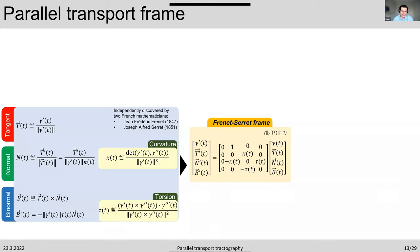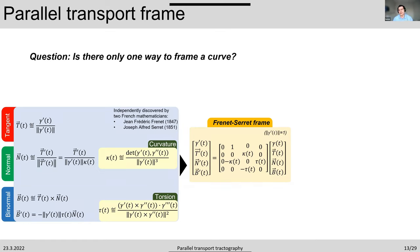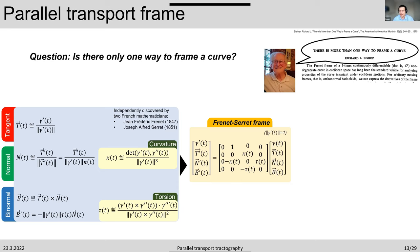The next question was: is there only one way to frame a curve? To our help, Richard Bishop's 1975 paper, titled 'There Is More Than One Way to Frame a Curve,' provided the answer. Professor Bishop started with the idea that you can take a curve and picture parallel curves that share the same tangent as the initial curve.